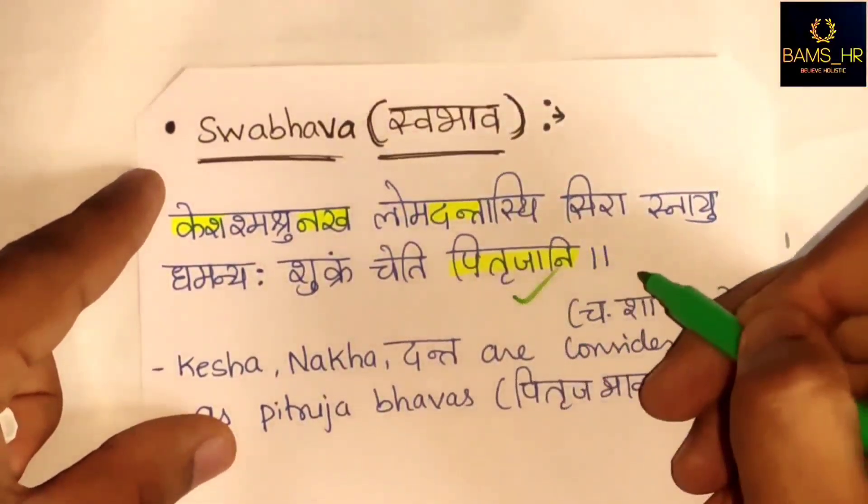Nakha Rogas: First is Chippa - caused by viciation of Pitta and Vata in Nakha Mamsa, causing pain, burning sensation, and even necrosis; also called Upanakha or Kshataroga. Second is Ku Nakha - when the nail is injured and becomes Ruksha (dry), black and hard; also known as Kulina.